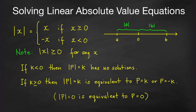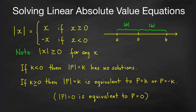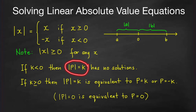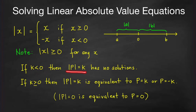When we solve equations with absolute value, the first step is always to isolate the absolute value on one side of the equation and study the right-hand side. If the right-hand side is a constant k and k is less than 0, then we are sure that this equation has no solutions, because the absolute value of any number is always greater than or equal to 0 — it will never be negative.